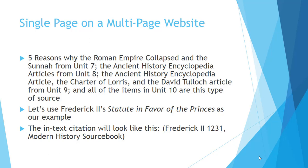Let's look at single pages on a multi-page website. This is probably the most frequent type of source you'll see for essay number three from units eight through ten. This includes: Five Reasons Why the Roman Empire Collapsed, and the Sunna from unit seven; the two Ancient History Encyclopedia articles from unit eight on feudalism and manorialism; the Ancient History Encyclopedia article from unit nine on the leisure time of an English aristocrat; the Charter of Loris in unit nine; the David Tulloch article from Encyclopedia.com; and all six items from unit ten — all single pages from multi-page websites.